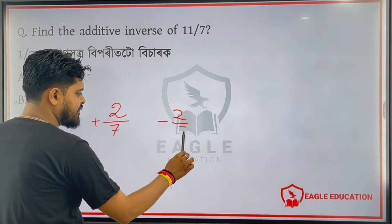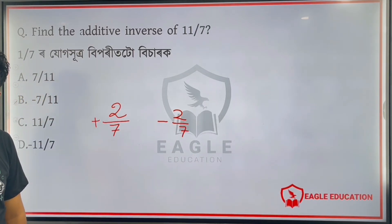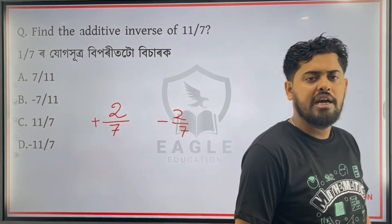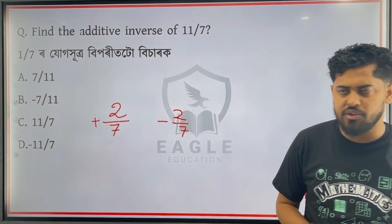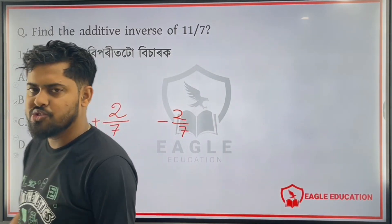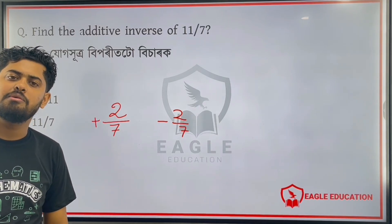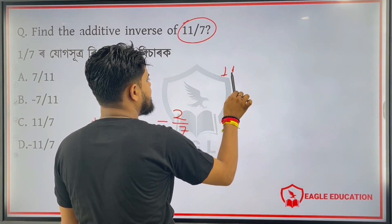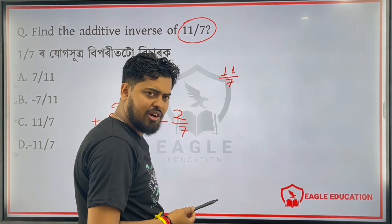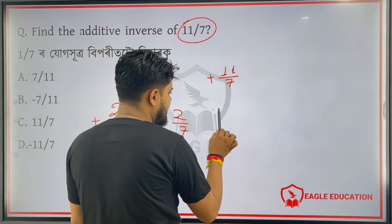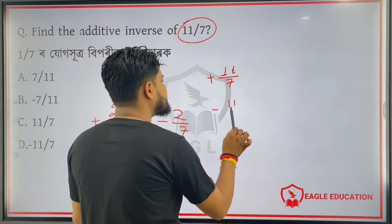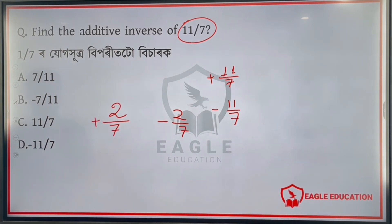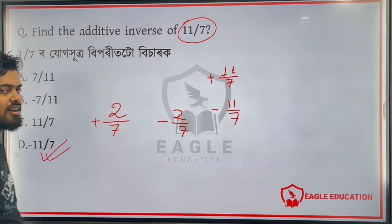We will place the additive inverse. Because you will have an additive inverse, they will place the additive. The additive inverse of 11 by 7 can be minus 11 by 7. Option D is the correct answer.